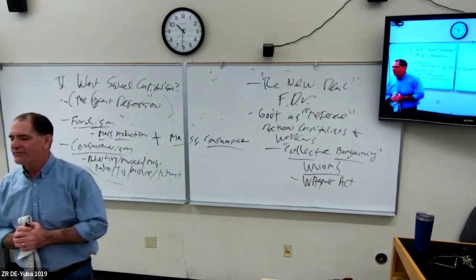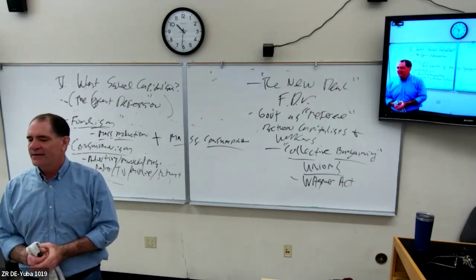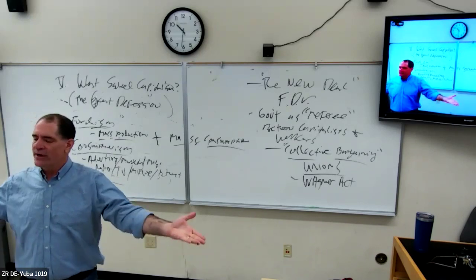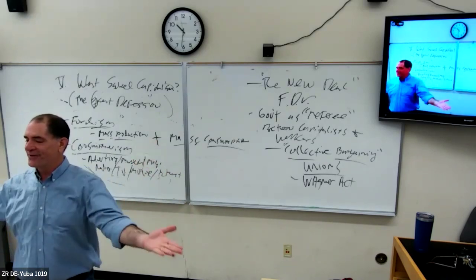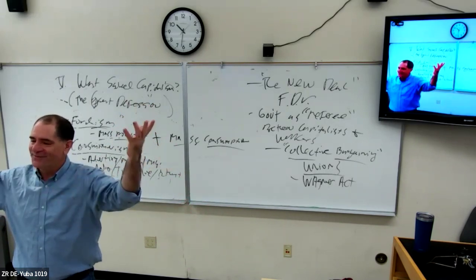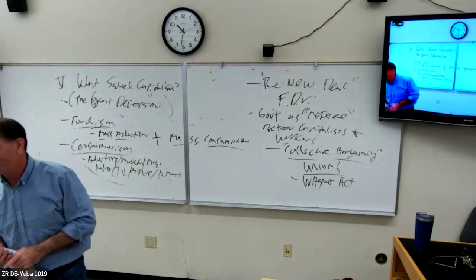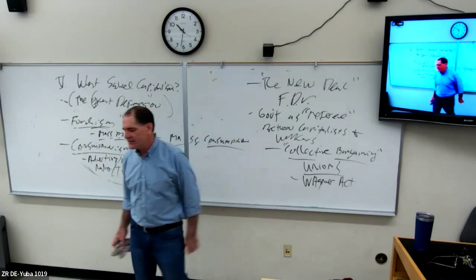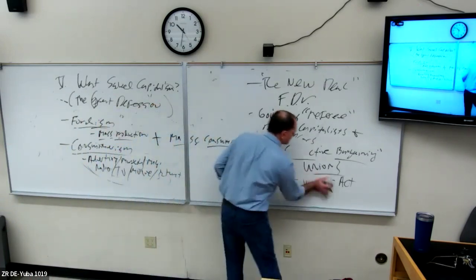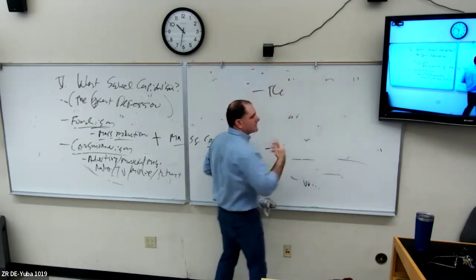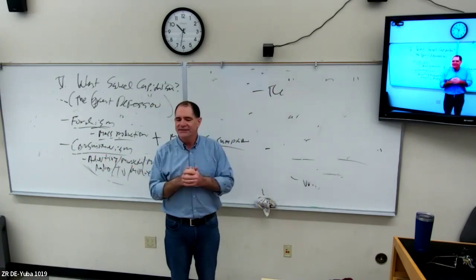Roosevelt and the capitalists knew that allowing unions means immediate profits go down — they'd have to pay workers more and provide health benefits. But they also knew, based on the Fordist model, that if capitalism changes so working people actually get taken care of better, it's better for everyone. As Roosevelt put it: 'a rising tide lifts all boats' — or 'a chicken in every pot.' If working people have food in their belly, they're better workers. Part of the New Deal was also the social safety net.